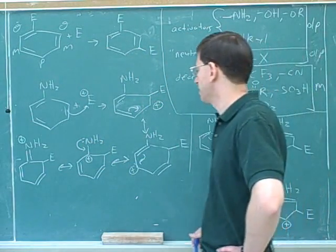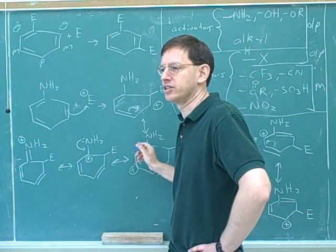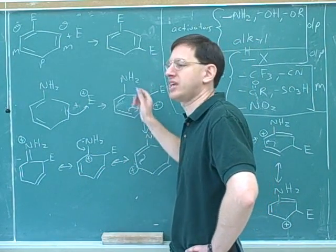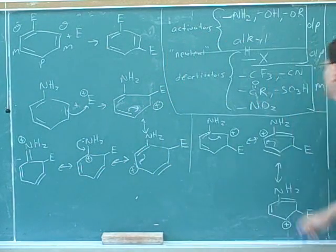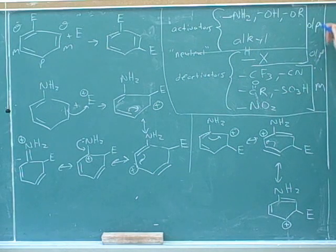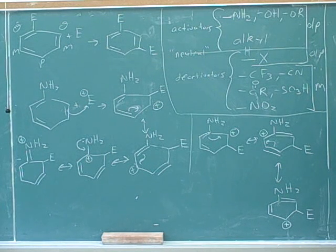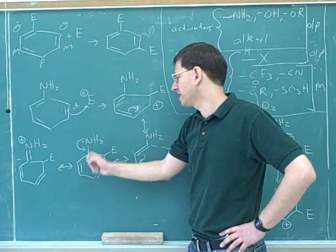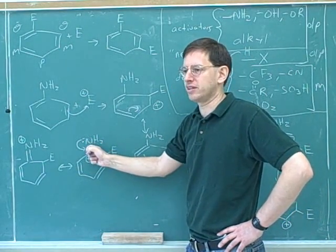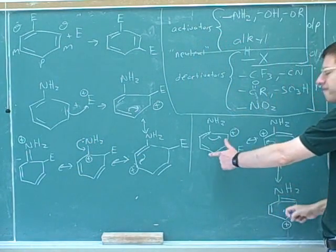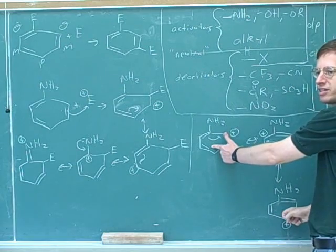It would be a good homework exercise to draw the resonance structures for the para attack — it's really the same as for the ortho attack, so there's a similar argument for ortho and para. You might also be asked to identify the most preferred resonance structure. This is especially preferred when it's close to the electron-donating group, and for the meta attack we don't have that most preferred resonance structure.